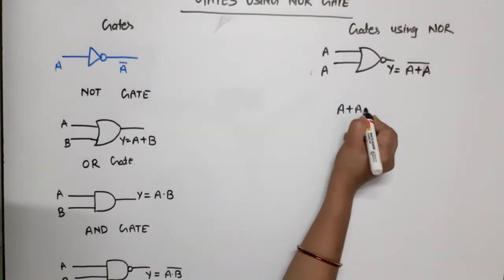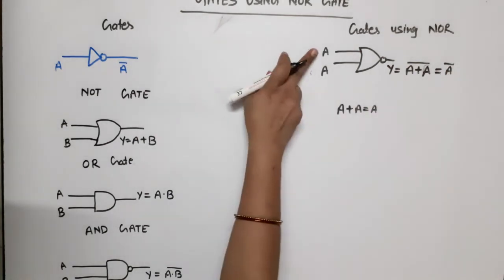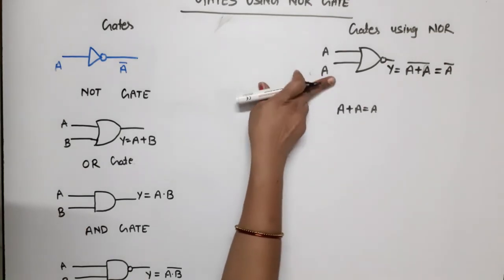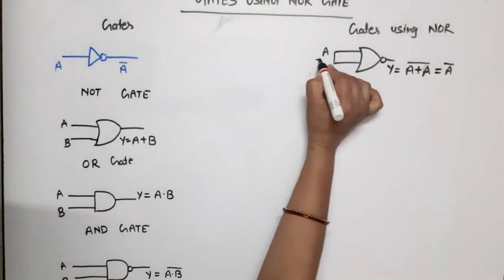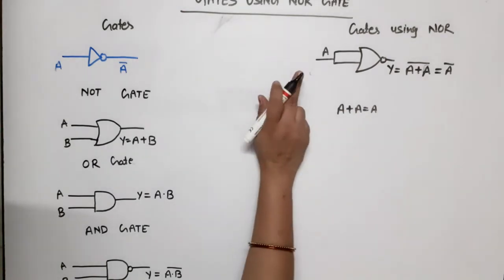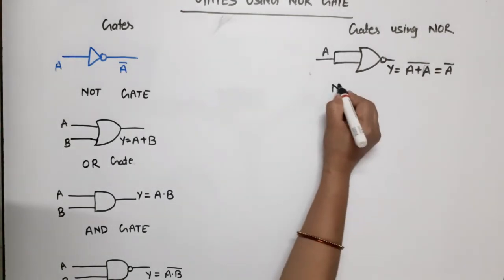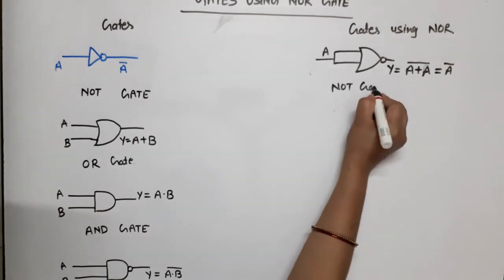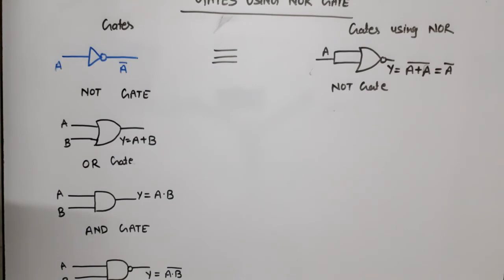According to Boolean algebra, A plus A is equal to A, so output is A bar. It is better to short both inputs and apply single input A. This is NOT gate using NOR gate only.